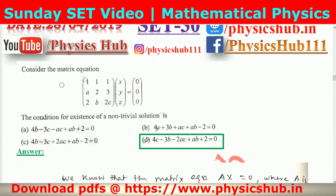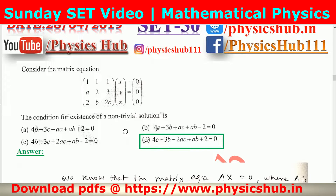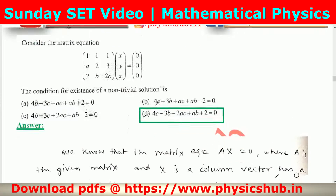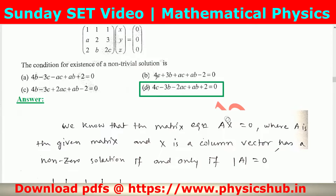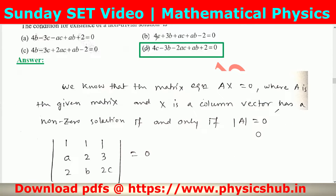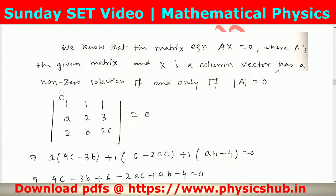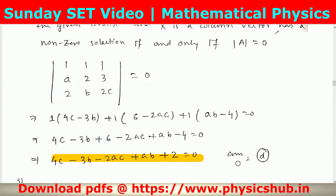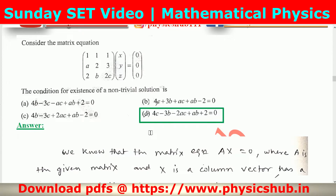Question number 4: consider the given matrix equation. The condition for existence of a non-trivial solution is that for A·x = 0, where A is a given matrix and x is a column matrix, a non-zero solution exists if and only if det(A) = 0. By equating the determinant to 0 and expanding, we match option 4. So option 4 is the correct option.